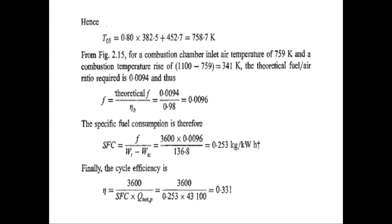The temperature rise in the combustion chamber is 1100 minus 759 = 341 Kelvin. To achieve this temperature rise, the theoretical fuel-air ratio required is 0.0094. The actual fuel-air ratio is computed as the theoretical fuel-air ratio divided by the combustion efficiency: 0.0094 divided by 0.98 = 0.0096.